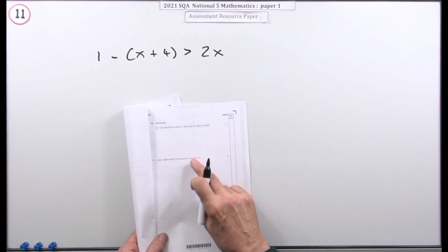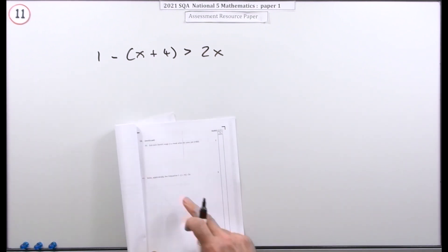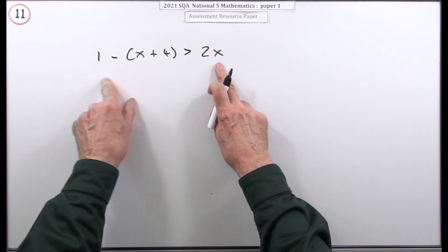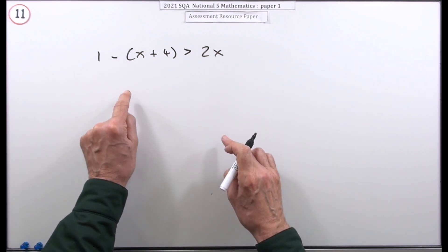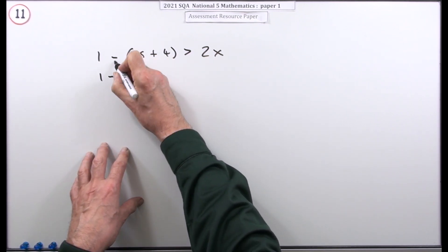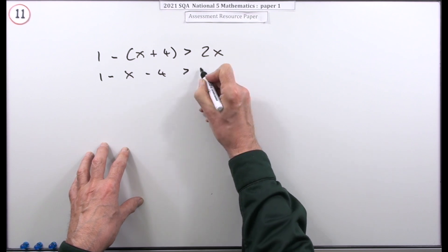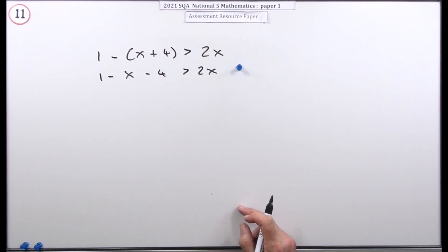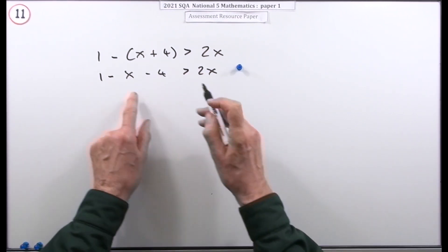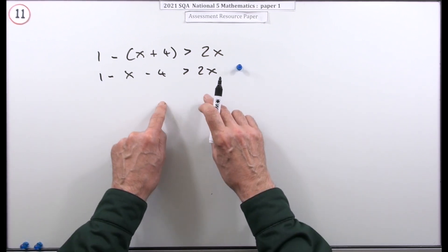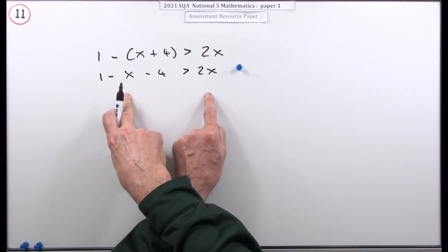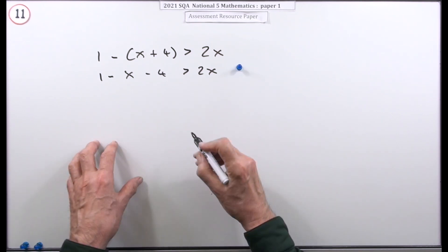Number 11: three marks — solve this inequality algebraically, meaning don't just guess numbers. One thing that will happen is the result will end up backwards, because usually you want x on the left and numbers on the right. The first step is to expand the bracket, splitting it into 1 minus x and minus 4 — that's worth a mark. There are two ways to proceed from there.